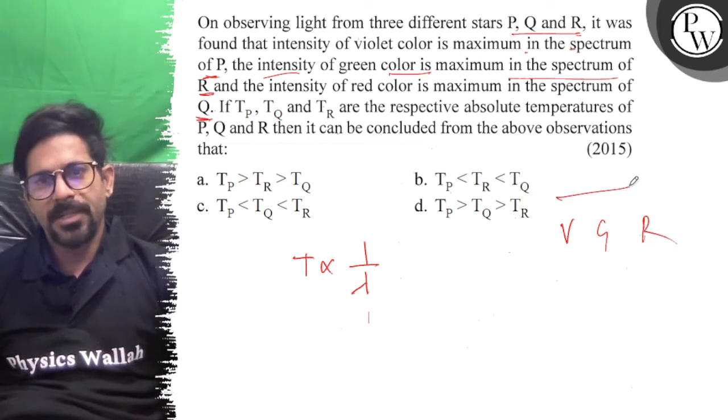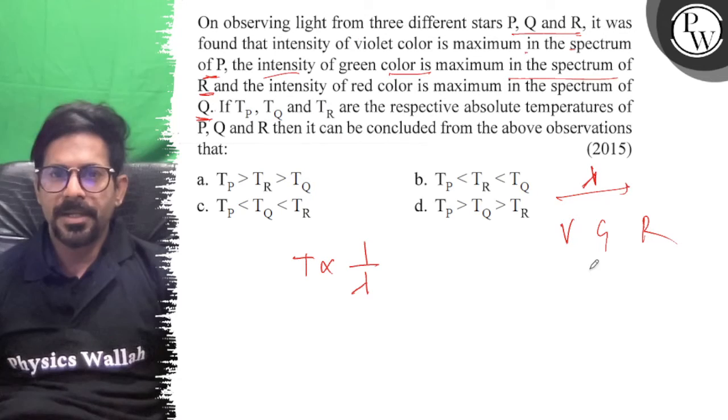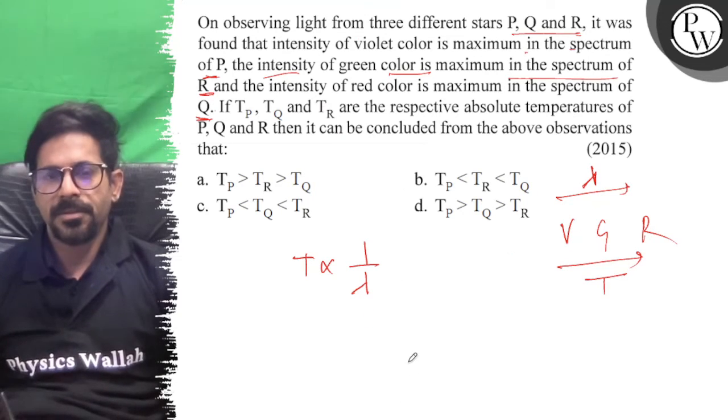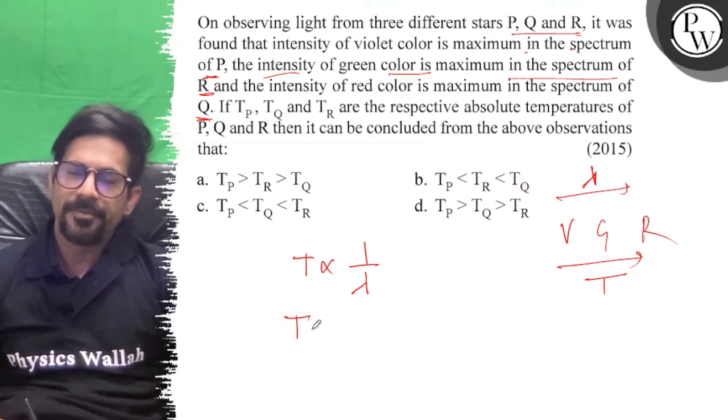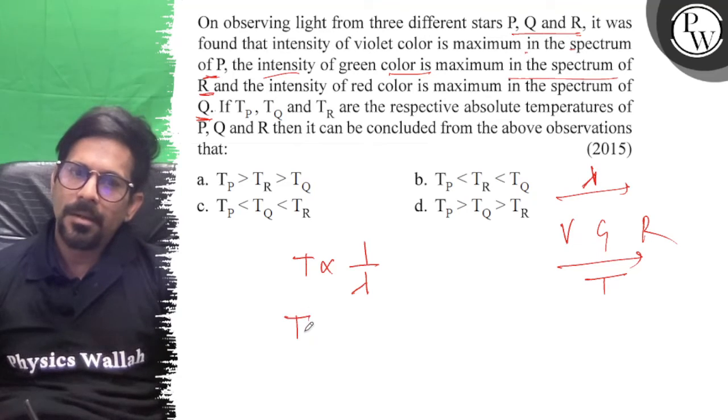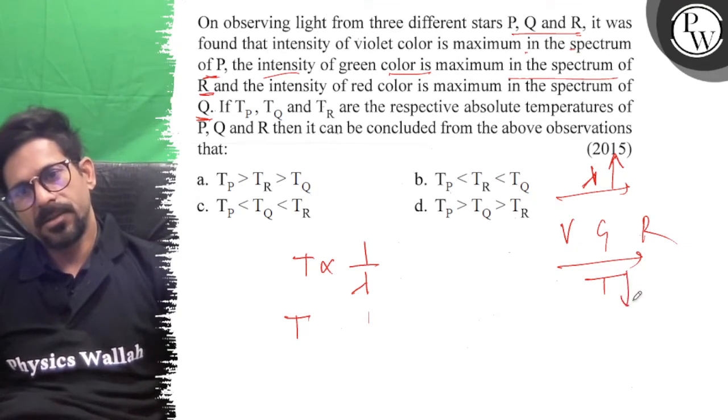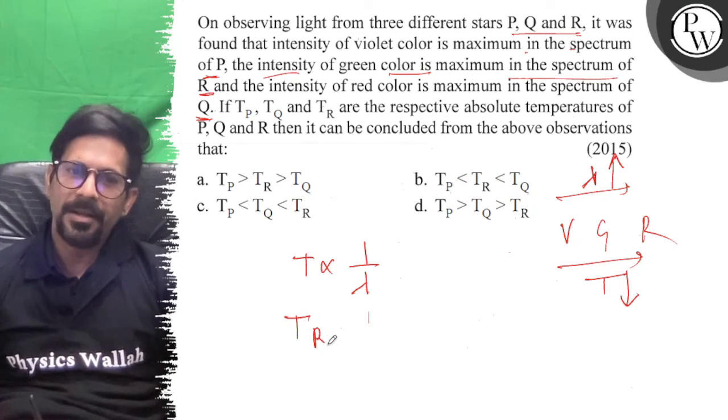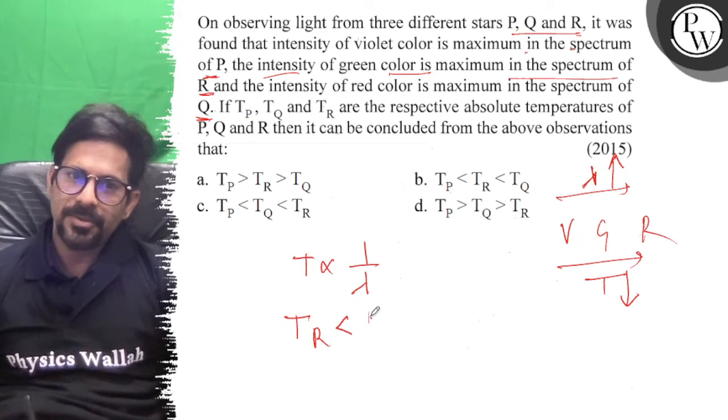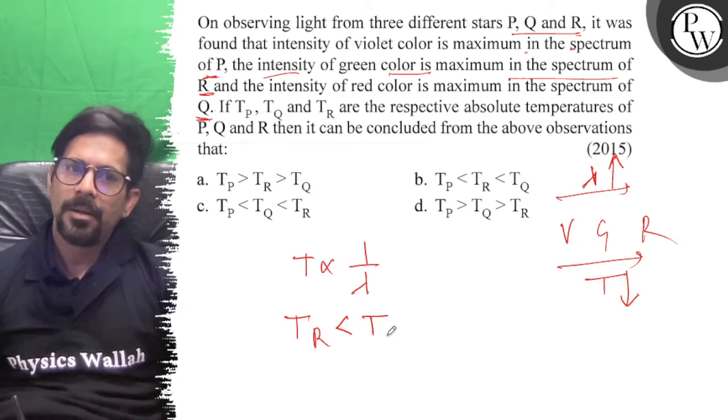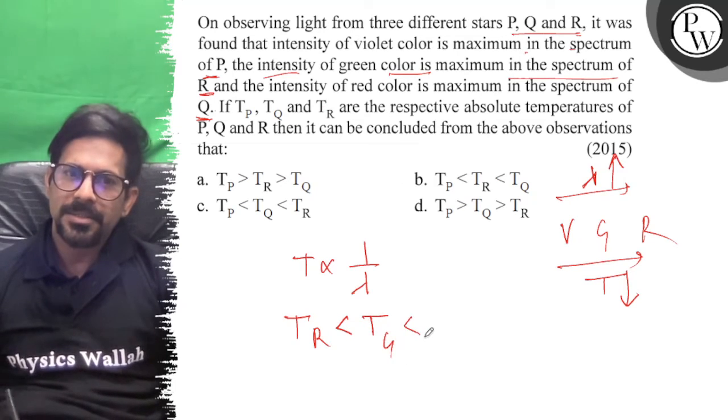So as the lambda will increase, the temperature will decrease. The temperature of red is less than the temperature of green, which is less than the temperature of violet.